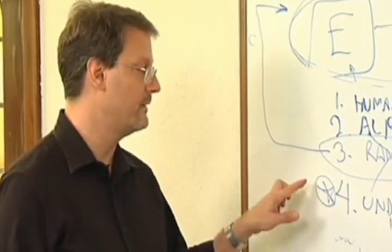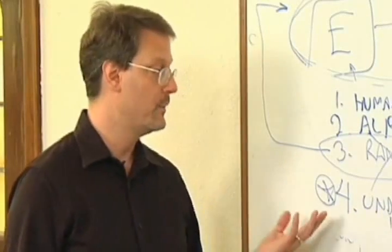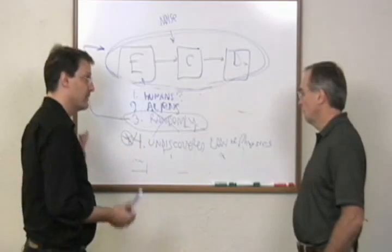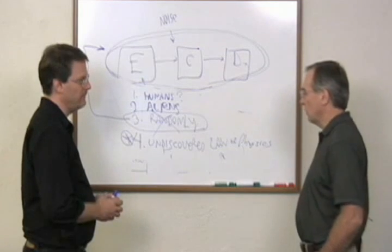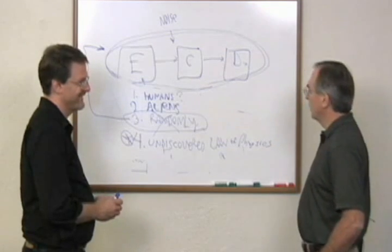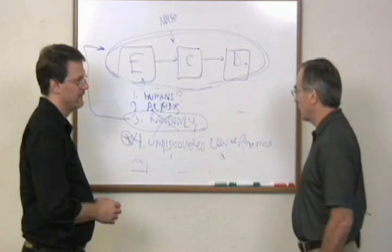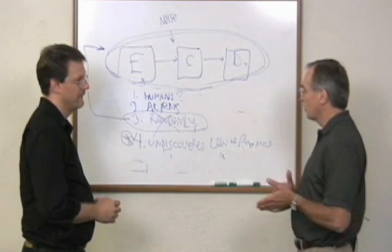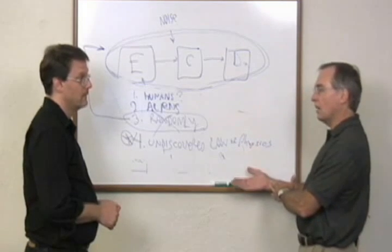But bottom line is you have to produce an example of a naturally occurring code before you can formulate a hypothesis about where they come from. Well, not just an example, I mean, in their definition, DNA is an example of a naturally occurring code. You have to produce an example of a process or some sequence that occurred that got you to that code naturally.